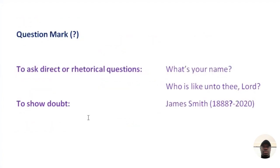The question mark is used to ask direct or rhetorical questions. For example: 'What is your name?' or 'Who is like unto thee?' — a rhetorical question. The question mark is also used to show doubt. For example: 'James Smith (1888? – 2020).' The question mark here indicates that you are not sure exactly when James Smith was born, but you are sure he was born around that time.